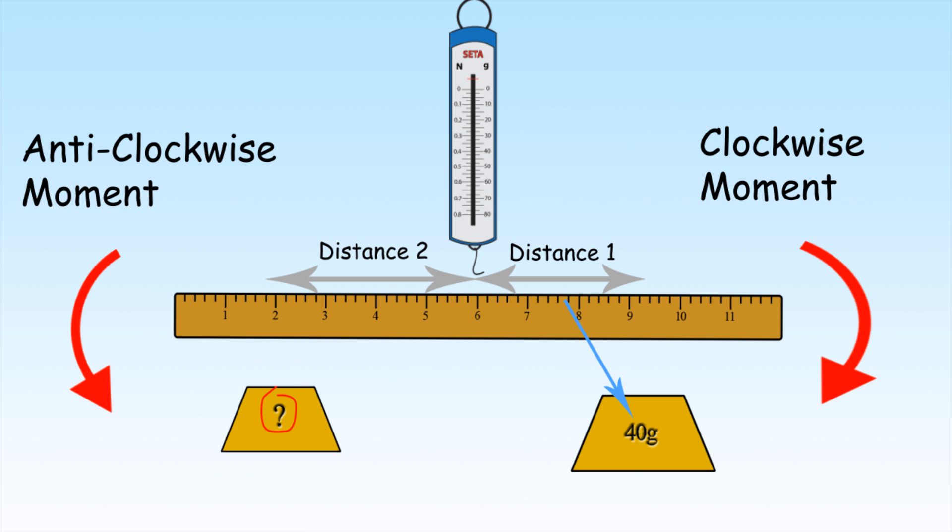To get the clockwise force, multiply distance one by the mass of the weight. As this should be equal to the anti-clockwise force, you need to simply divide this number by two to get the mass of the second weight.